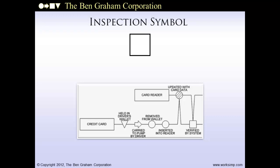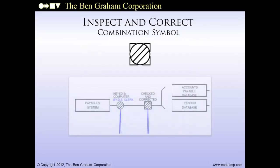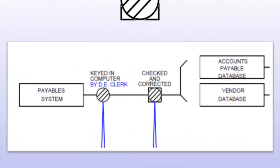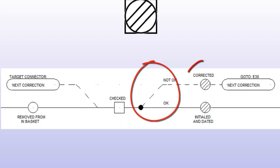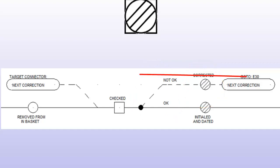There is one combination symbol: the inspect-and-correct symbol, which combines an inspection symbol and an add-alter symbol. It represents instances of editing work where you work through a document and make any corrections that are necessary — there may be no corrections or there may be several. The snippet shows one inspect-and-correct step where entries into the payable system are looked over and corrected as necessary. This symbol takes the place of an inspection followed by a correction routine that loops back to the inspection step.